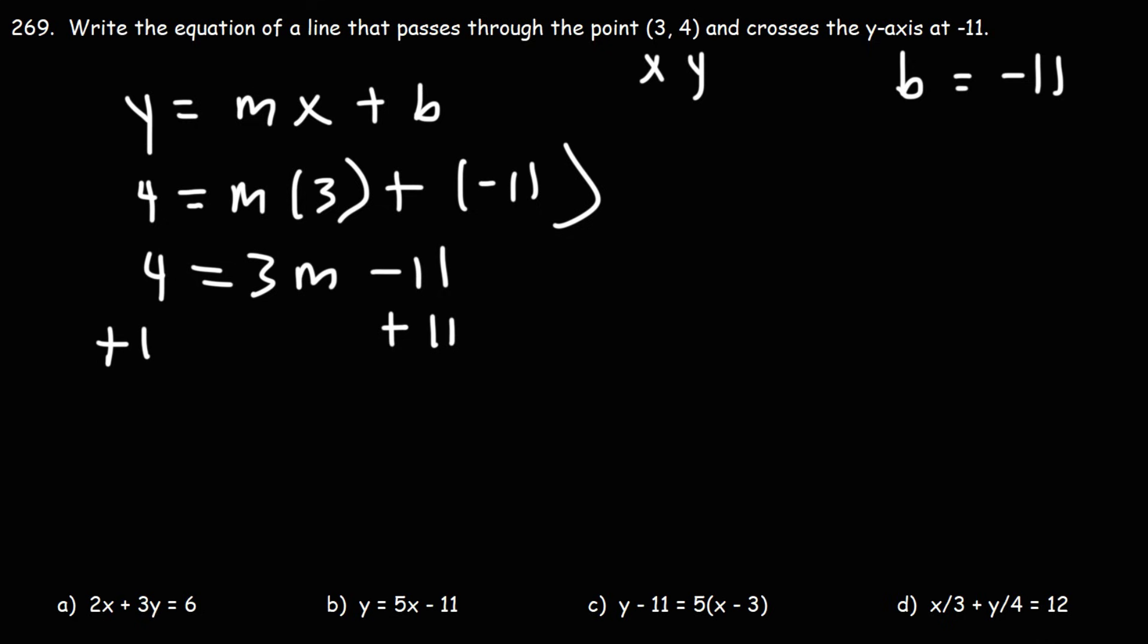I'm going to add 11 to both sides. Here it's going to cancel. We could bring down the 3m. 4 plus 11 is 15. Next we could divide both sides by 3. 15 divided by 3 is 5.